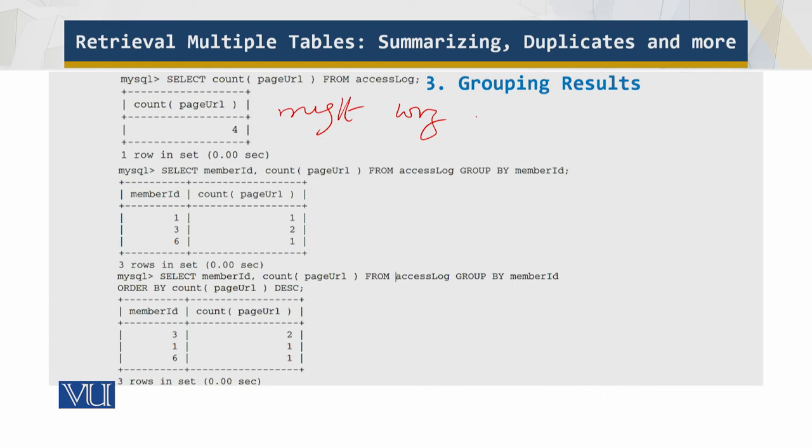Instead, you need to group the page URL count by a member ID. To do this, you add a GROUP BY clause, which is in this over here. This works. That's better. By combining the aggregate function COUNT with the column to group by a member ID, you can view statistics on per member basis. In this case, you can see that members 1 and 6 have each viewed one distinct page, whereas member 3 has visited two different pages.